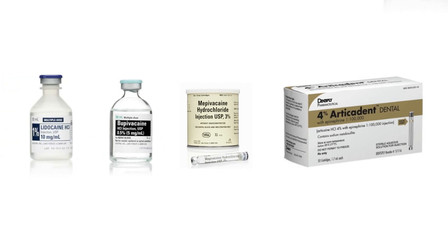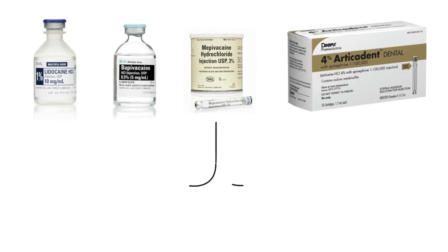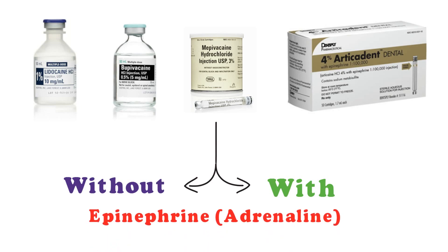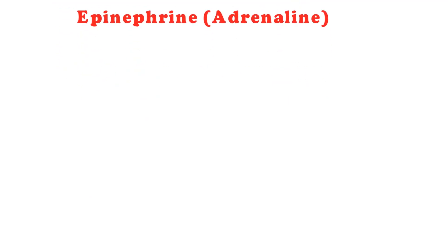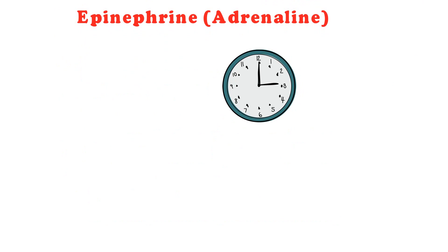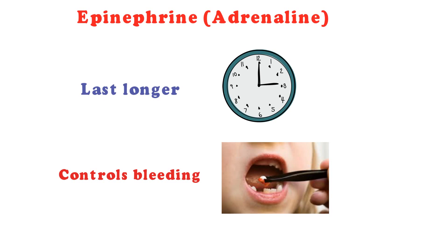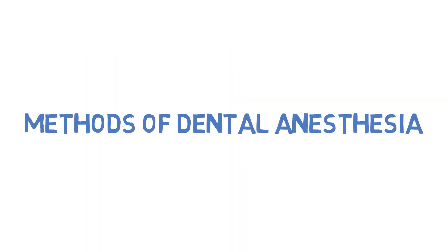Most agents come in two forms: with and without epinephrine (adrenaline) or other vasoconstrictors. These allow the agent to last longer and also control bleeding in the tissue during procedures. Here are the methods of dental anesthesia.